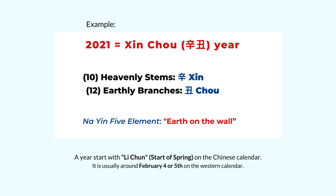The li chun date is usually on February 4th or February 5th. So if your birthday is before that — maybe in January — then you will belong to the previous year. For example, this year 2021 is the year of Xin Chou. The first letter Xin is from the 10 heavenly stems, and the second letter Chou is from the earthly branches. When we check the five elements, this personality is called earth on the wall — so earth is the five element, but it has a more descriptive character with its own special meanings.